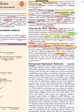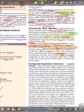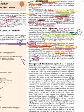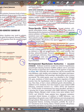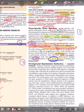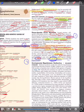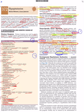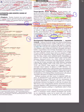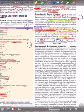The third transcription factor is Tpit. So: number one is Pit-1, number two is Prop-1, and number three is Tpit. Tpit mutation is only responsible for ACTH deficiency, associated with hypocortisolism. To summarize transcription factor mutations: Pit-1 affects GH, prolactin, and TSH; Prop-1 affects those three plus gonadotropin and ACTH; Tpit is only for ACTH.